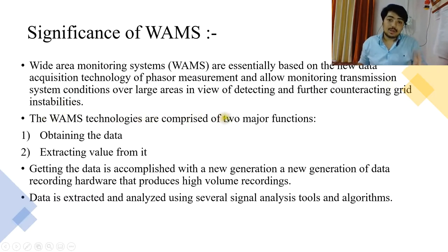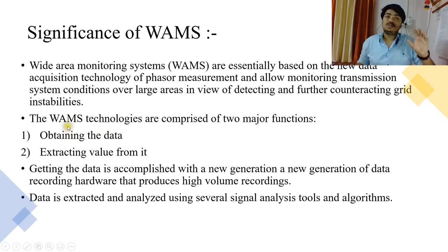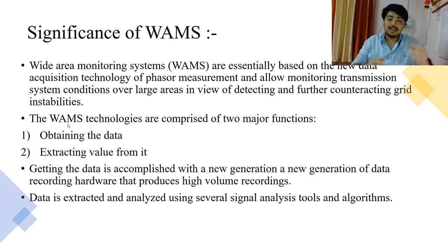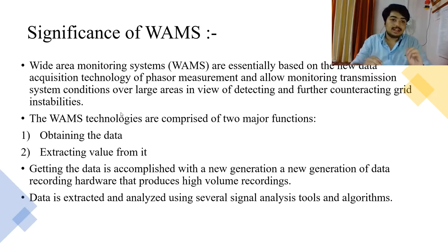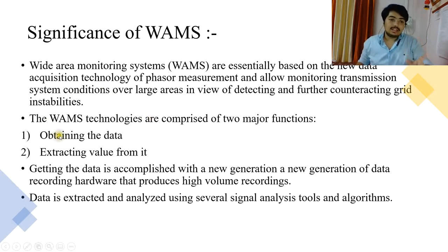WAMS technology comprises two major functions. First, it needs to obtain the data — you need to know at what voltage level, current level, phase angle, and so on the grid is operating. Second is extracting values from it — if the voltage is going beyond the set threshold, you identify there's a problem and check it. These are the two major things done by WAMS.